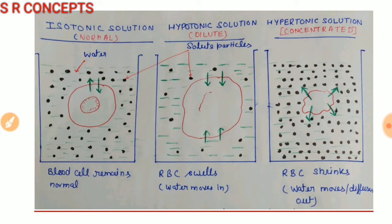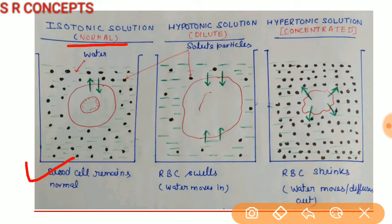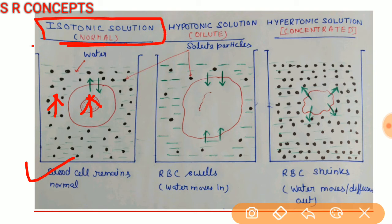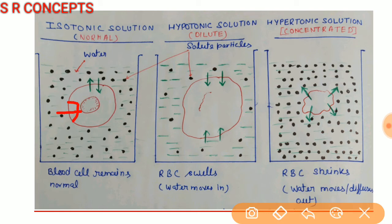In the third beaker there is a normal solution — called an isotonic solution — where the water concentration in the solution is equal to the water concentration inside the cytoplasm. In this case, water moves into and out of the cell at the same rate, so there is no net movement of water and the cell remains normal in size. These are the three terms: isotonic, hypotonic, and hypertonic, and the processes of endosmosis and exosmosis.